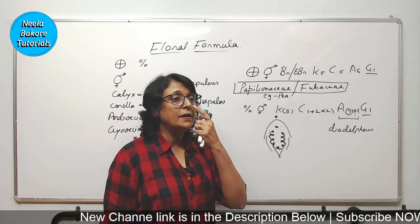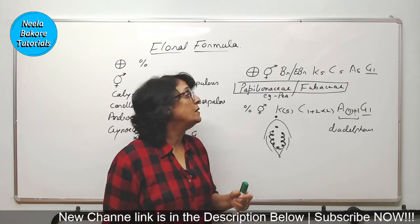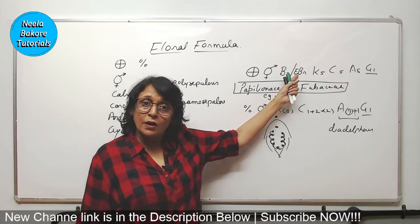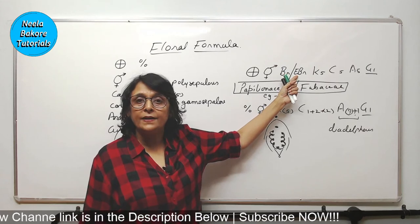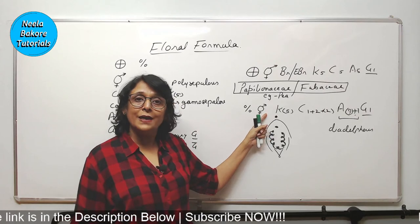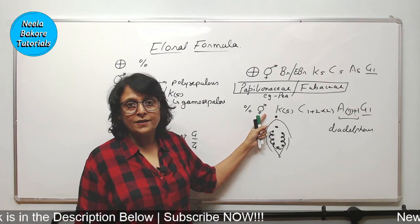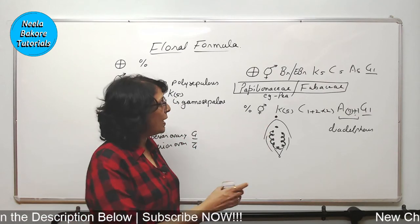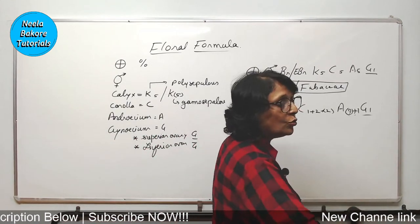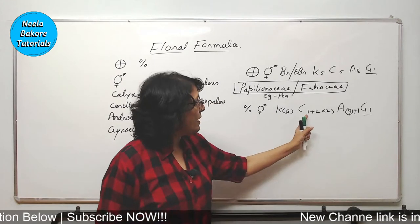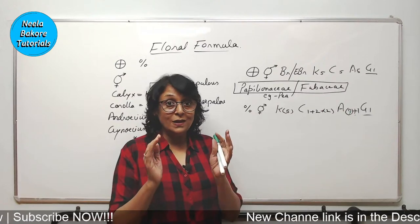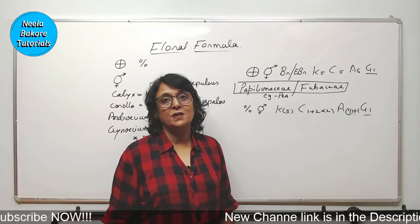Mansi asks about the difference between bracteate and ebracteate. If a bract is present, we call it bracteate. If bract is not there, we call it ebracteate. Here we have not written anything, that means there is no bract. How do you identify that this is the formula of Fabaceae family? There are two characteristics: one plus two plus two in the corolla, and nine plus one in the androecium. If you see this, then you know it is Fabaceae family.